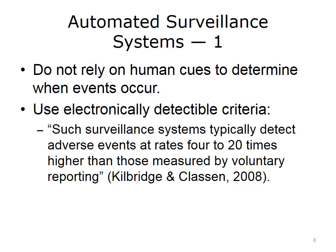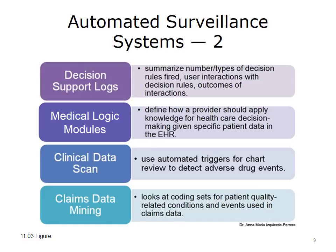Automated surveillance systems use electronically detectable criteria and rules to determine when potential or actual safety events occur. These systems don't rely solely on human cues, often missing when clinicians get too busy to detect early warning signs of impending safety events. Decision support logs summarize the numbers and types of decision rules fired, the interactions of the user with the decision rules, and the outcomes of these interactions. For example, if we have a decision rule that warns providers of inappropriate dosing of a drug for particular patient types based on kidney function, the decision support logs can tell us the number of times this rule fired, as well as the number of times the prescriber either changed or failed to change the drug.